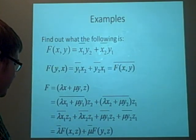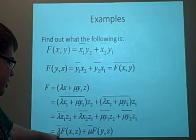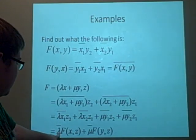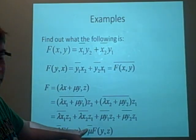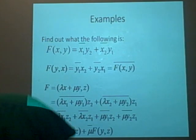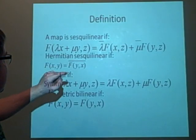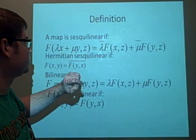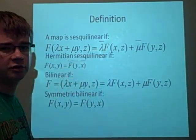Then we can actually divide this up and look at it like this, such that it's the complex conjugate of lambda times the f of xz plus the complex conjugate of mu times f of yz. And that means this is also, if we look back at our definitions, it is also sesquilinear. So we knew it was Hermitian sesquilinear, so we already knew this was true, but we just proved that as well.